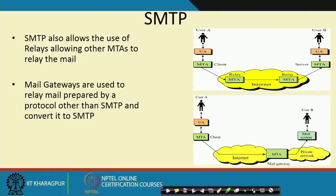SMTP also allows the use of relays, allowing other MTAs to relay the mail. Other than MTA acting in a client-server role, it also allows MTA relay. Mail gateways are used to relay mail prepared by protocols other than SMTP and convert it to SMTP. The mail goes through different relays, and the mail gateway allows the mail to reach the other end.